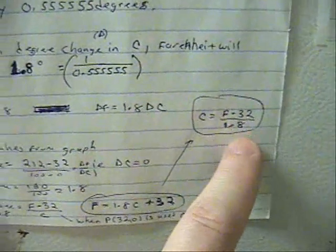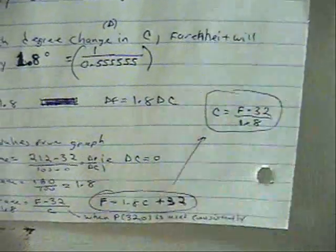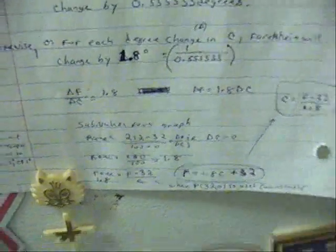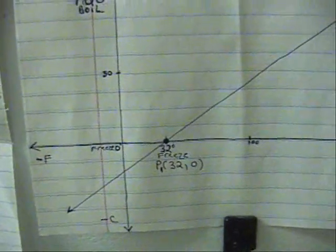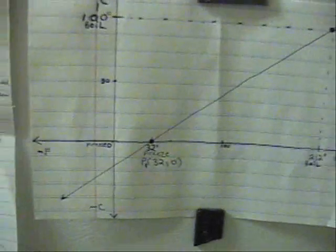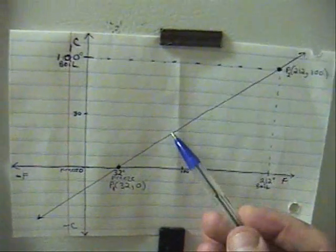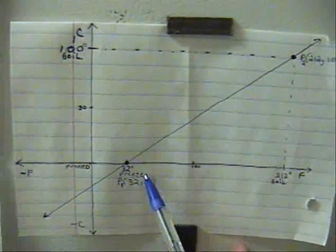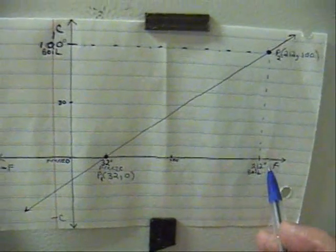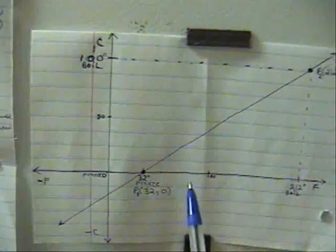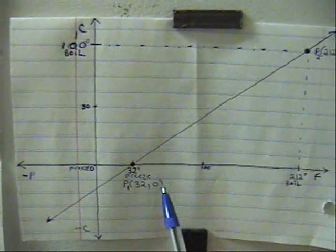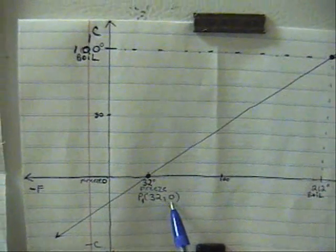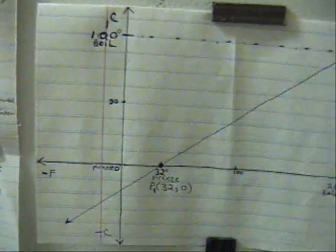Or Celsius equals Fahrenheit minus 32 divided by 1.8. When that point's used consistently, when you're choosing, say, a Fahrenheit, you're trying to find out the corresponding Celsius temperature, when you do the change in Fahrenheit divided by the change in Celsius thing to find the missing value, if this point is used consistently, then that simplifies the formula.